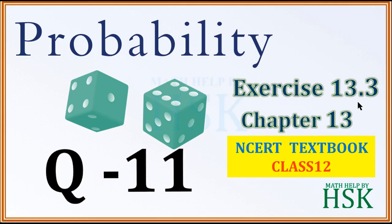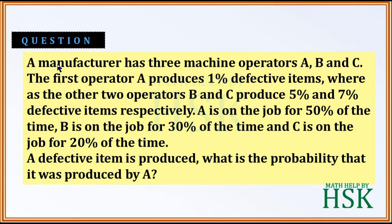Question number 11 of exercise 13.3. A manufacturer has three machine operators A, B, and C. Operator A produces 1% of defective items, whereas operators B and C produce 5% and 7% of defective items respectively.